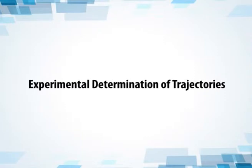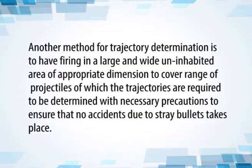The experimental determination of trajectories is done by test firing from a machine test or bench test after ascertaining proper functioning of the baseline. The height of various ranges from the baseline at various screen positions gives the height of the trajectory at those distances. Plotting distances and heights gives the trajectory of the projectiles, and there should be a large number of shots to ensure better accuracy. Another method is to fire in a large, wide, uninhabited area of appropriate dimensions to cover the range of projectiles, with necessary precautions to prevent accidents from stray bullets.